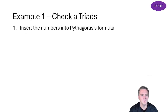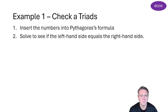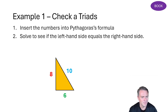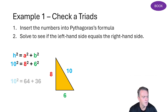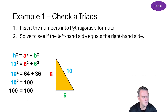Example number one: we want to check whether a set of numbers is a triad, which also checks whether it forms a right-angle triangle. You insert the numbers into Pythagoras's formula, solve the left-hand side, and check it equals the right-hand side. We write the rule: H squared equals A squared plus B squared. The hypotenuse is 10 and the other two sides are 6 and 8. So 10 squared equals 64 plus 36, giving 100 equals 100. Yes — therefore it is a triad.